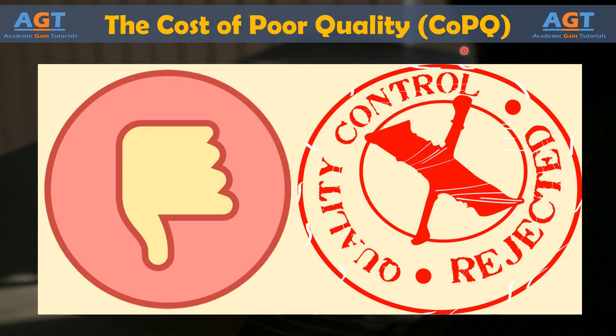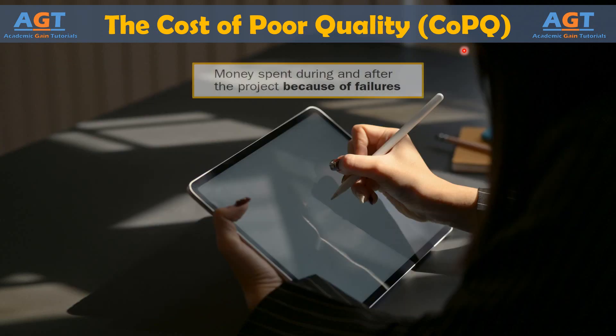CoPQ is usually broken into two major categories: costs associated with external failures and costs associated with internal failures. External and internal failures are often referred to as the costs of non-conformity — they are the expenses that occur when outputs do not conform to critical to quality requirements.